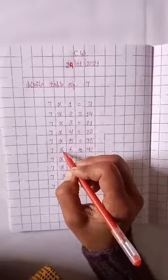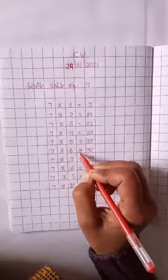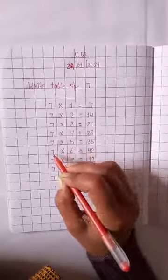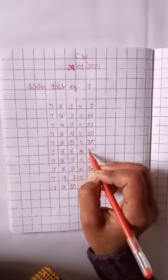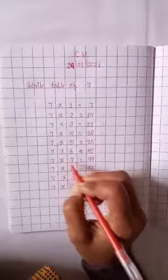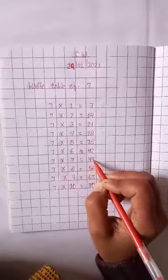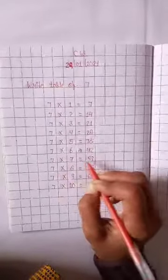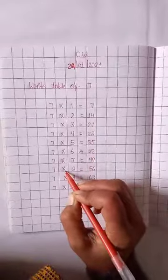Seven multiplication, six times is equal to forty-two. Seven, six times, forty-two. Seven multiplication, seven times, forty-nine. Seven, seven times, forty-nine.